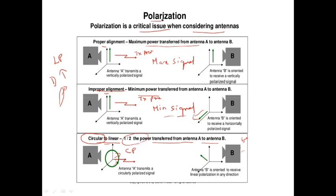Polarization matching in antennas is very important. If polarization is mismatched, the power received by the antenna reduces. If both transmitting and receiving antennas are perfectly matched in polarization, maximum power is transferred. Based on this concept, antenna polarization is selected for different applications.